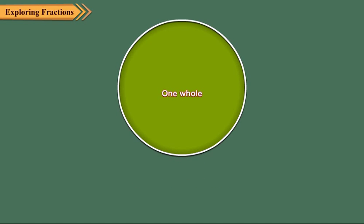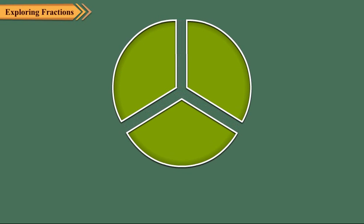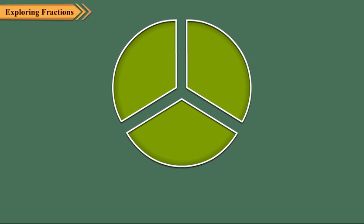Now, draw a circle and divide it into three equal parts. Each part is one-third, that is, one upon three. Clearly, three one-thirds make a whole.